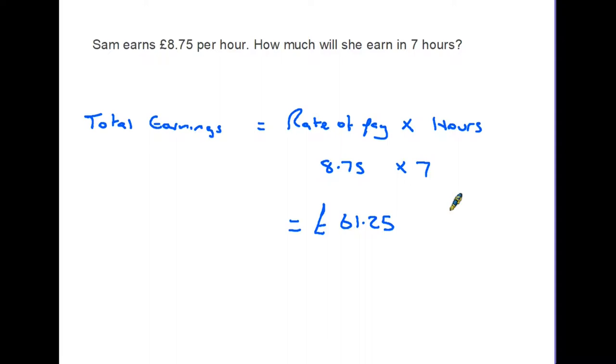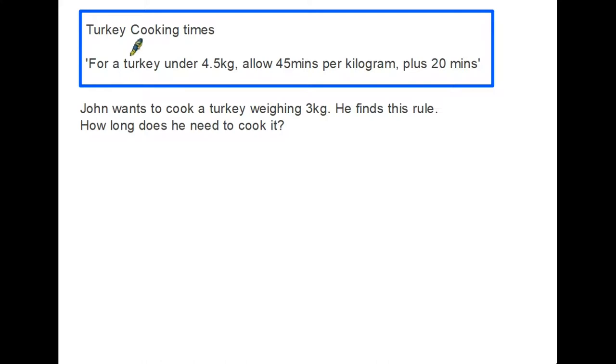Now there are some formulas which have more than one step. So let's have a look at one of those. The first thing the question does, it gives us a box which has some instructions in. And it tells us about turkey cooking times. And the instructions are, for a turkey, if you have a turkey under four and a half kilograms, allow 45 minutes per kilogram plus 20 minutes. So this in fact is a formula. You follow the formula with your turkey and it's properly cooked.